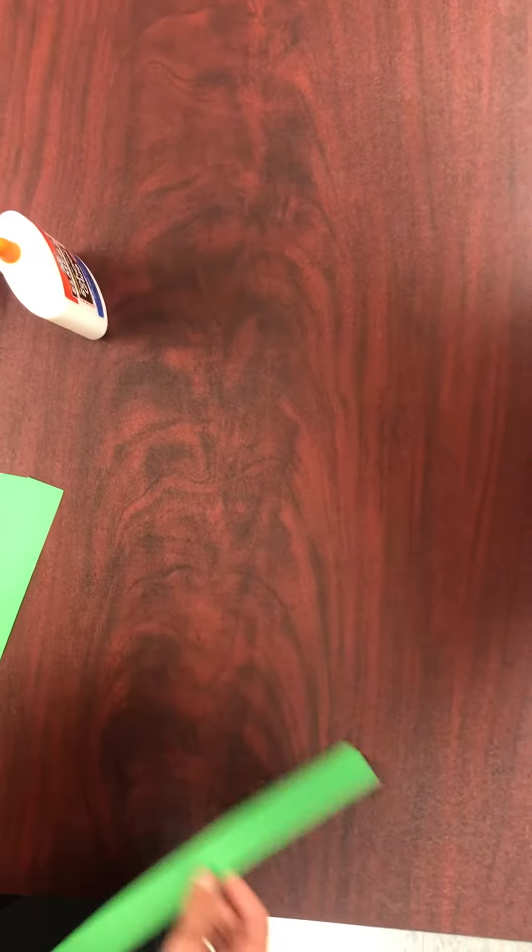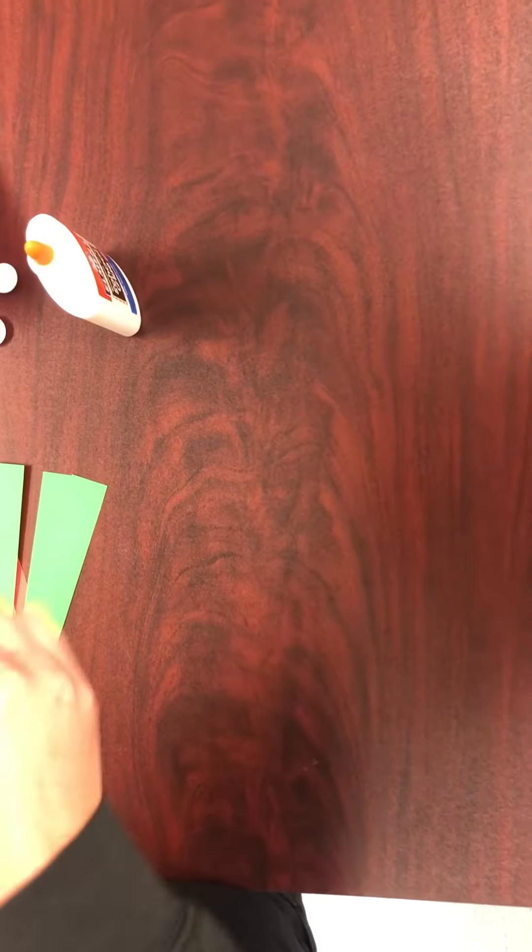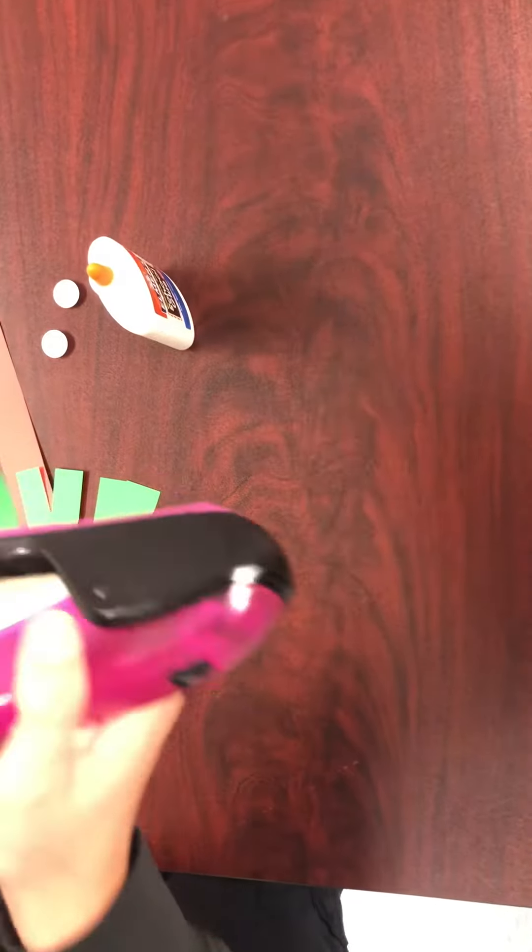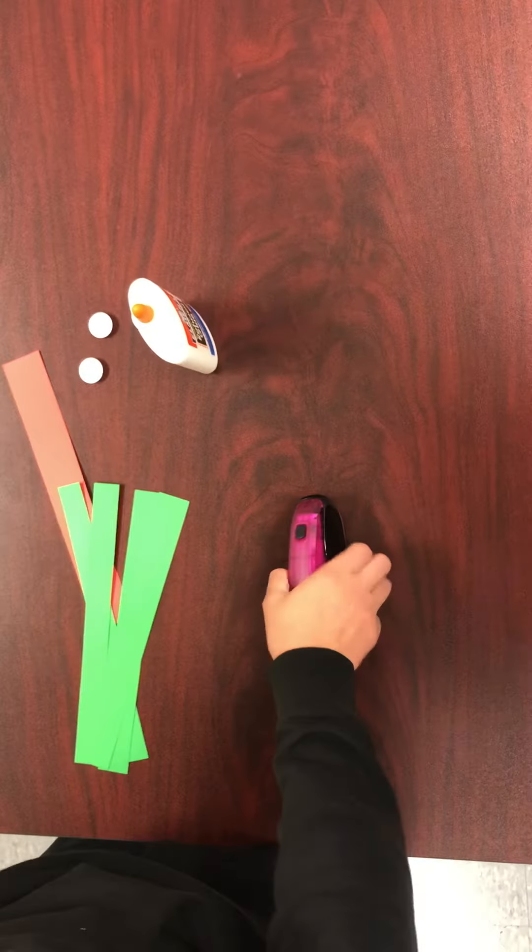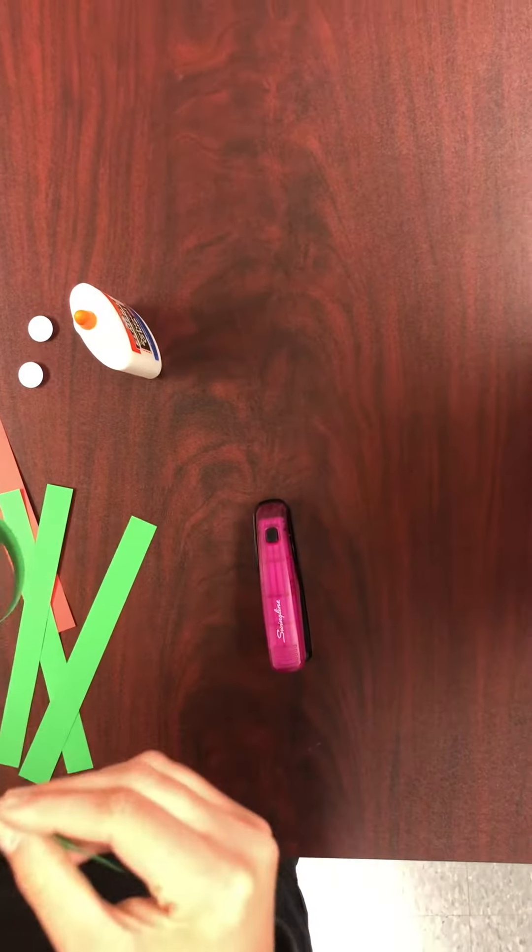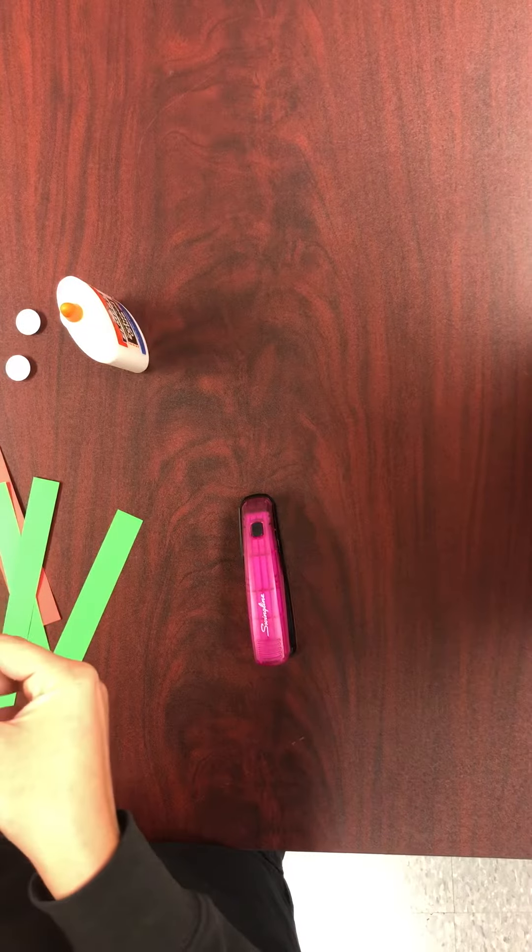The first step is to take your green strip and make a circle, then staple it. You're going to attach all of the green circles together by doing this.